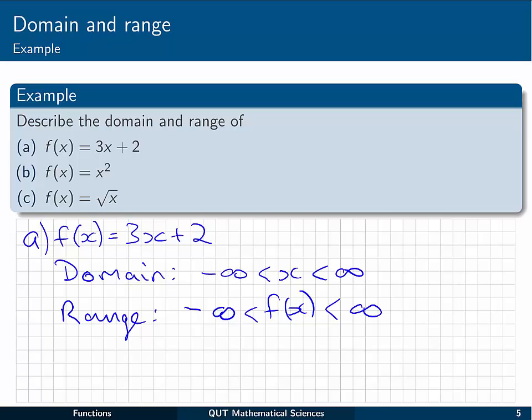So first of all, f of x equal to 3x plus 2. We can multiply any number we like by 3 and then add 2 to the result. So the domain is any x value we like from the real numbers, minus infinity through to infinity.